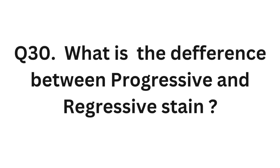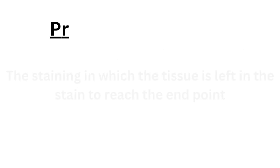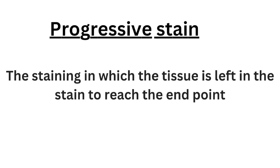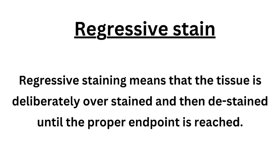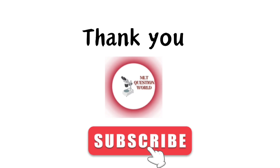Question number 30: What is the difference between progressive and regressive staining? Progressive staining is where the tissue is left in the stain to reach the desired end point; the tissue is kept in the stain until the end point is reached. Regressive staining means the tissue is deliberately over-stained and then destained until the proper end point is reached.